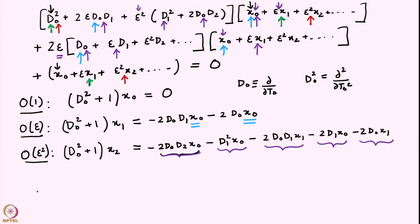The procedure is to solve the equations at every order, starting at the lowest order and proceeding step by step. At every order we find the complementary function and particular integral. Crucially, the particular integral must not contain any resonant forcing terms — if it does, we set those to zero, which yields amplitude equations governing the slowly varying amplitude at the next time scale.